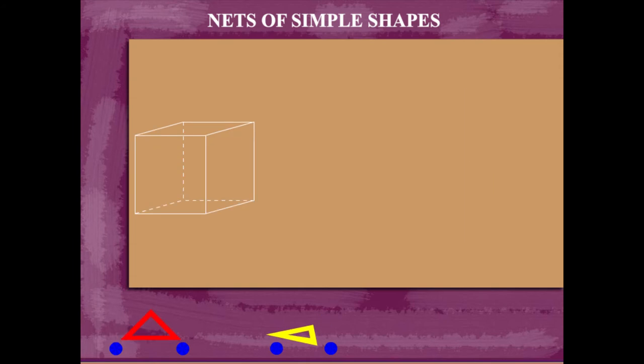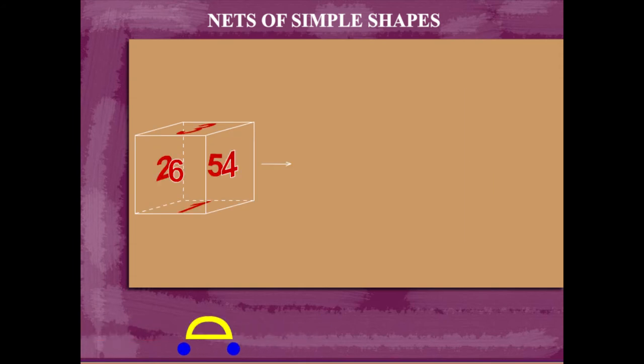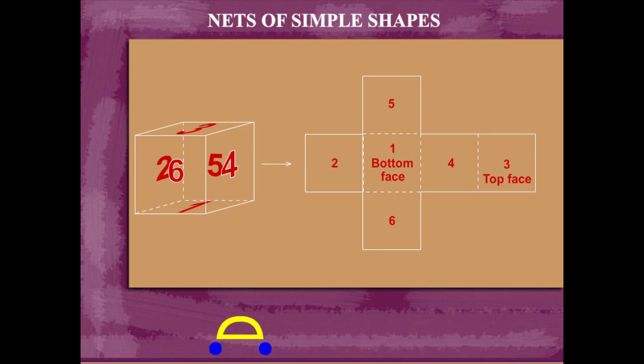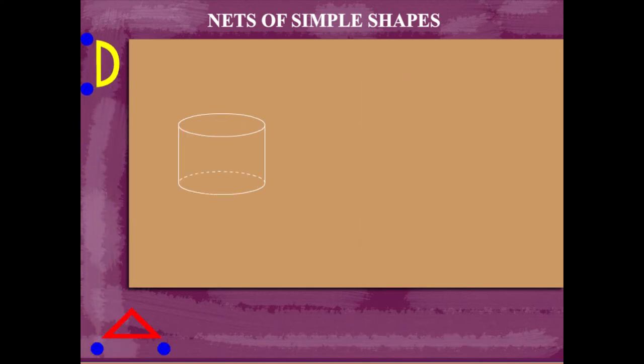Here is a 3D cube with 6 equal sides. Let's see what the 2D net looks like. Here it is.